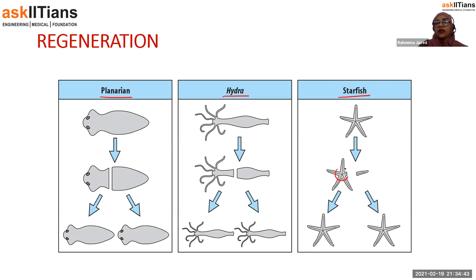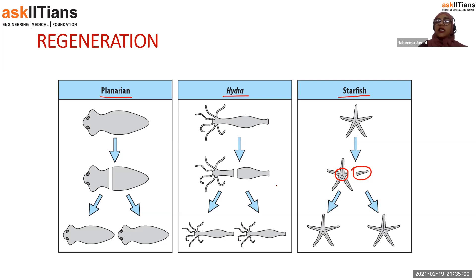If the central disc of the starfish is removed and attached to an arm, that arm is capable of developing into an adult. Some starfishes can also regenerate their arms, which is specifically shown in this diagram.